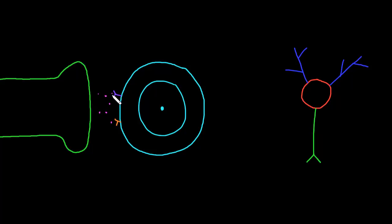So this axon terminal might be releasing a neurotransmitter at the synapse, and perhaps when it binds to this purple receptor, that causes an excitatory potential in the target cell. But if it binds to this orange receptor on the postsynaptic membrane, that would cause inhibition of the target cell — it would cause an inhibitory potential.